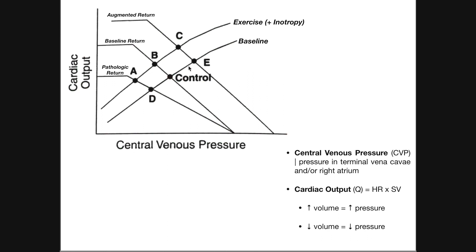How would we get from the control point to point D? D is on the same cardiac function line as E, so we're still not changing the intensity of activity. But we're losing central venous pressure — the pressure in the right atrium is dropping. To lower pressure, we lower blood volume. The best way to do this without a traumatic accident would simply be dehydration. When dehydrated, blood volume drops, which drops the central venous pressure and therefore drops cardiac output. Notice that point E is associated with augmented venous return, whereas point D is associated with pathologic or diminished venous return relative to the control.